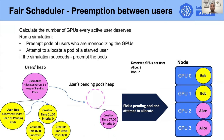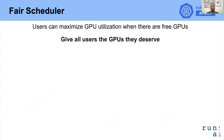To summarize: with the allocation and preemption algorithms, users can get the most GPUs when they are free. When a user submits pods, they are able to get the GPUs they deserve and will not be starved.